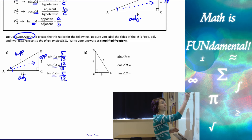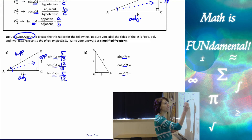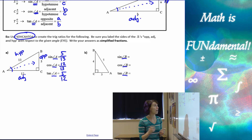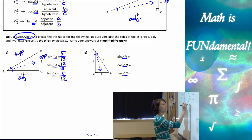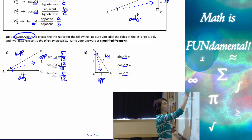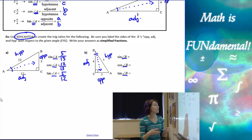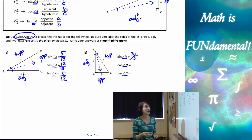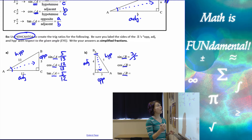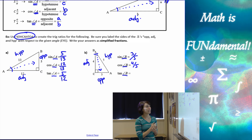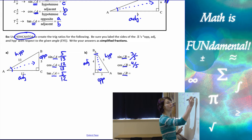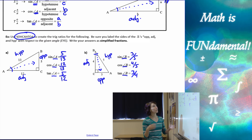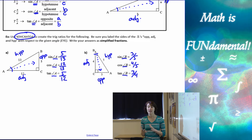Now for angle B: sine of B, cosine of B, and tangent of B. Again, always look for that reference angle, mark it on your diagram, and figure out your sides. Sine of B is opposite over hypotenuse: 3 over 5. Cosine of B is adjacent over hypotenuse: 4 over 5. And tangent of B is opposite over adjacent: 3 over 4. Read your instructions carefully — here all they wanted was simplified fractions.